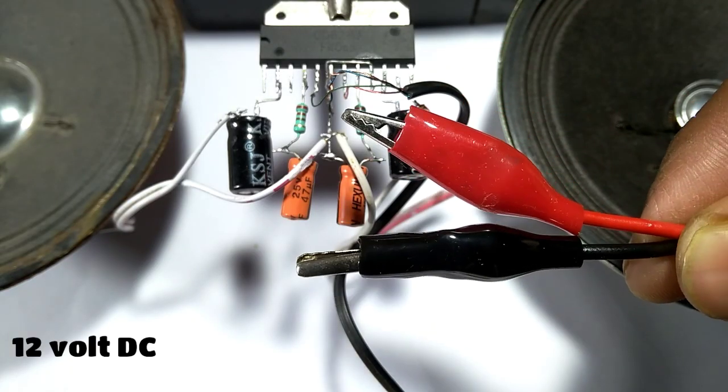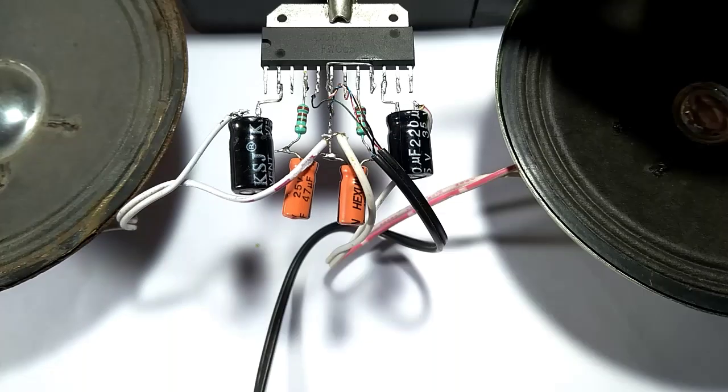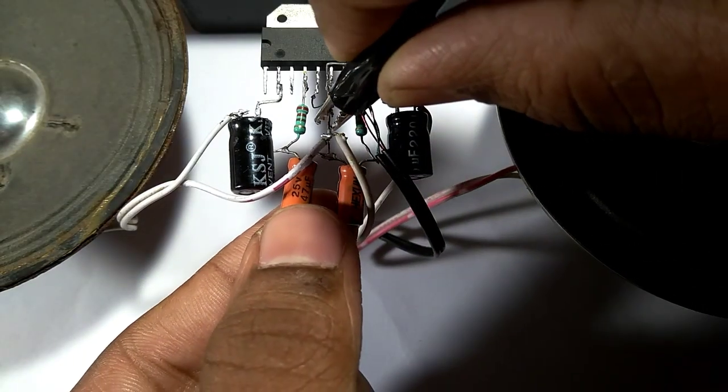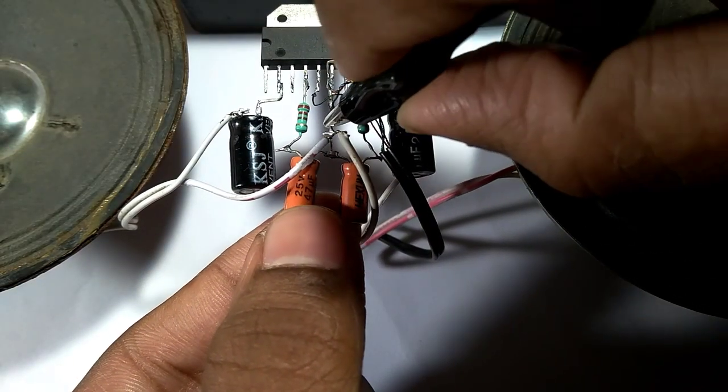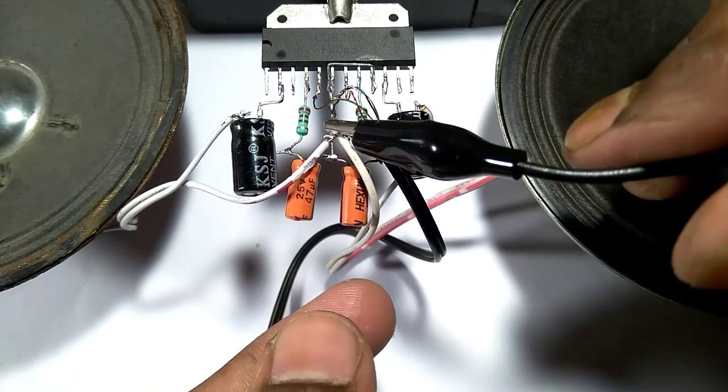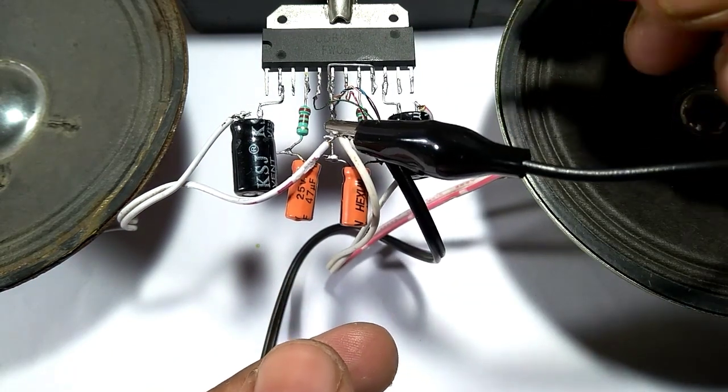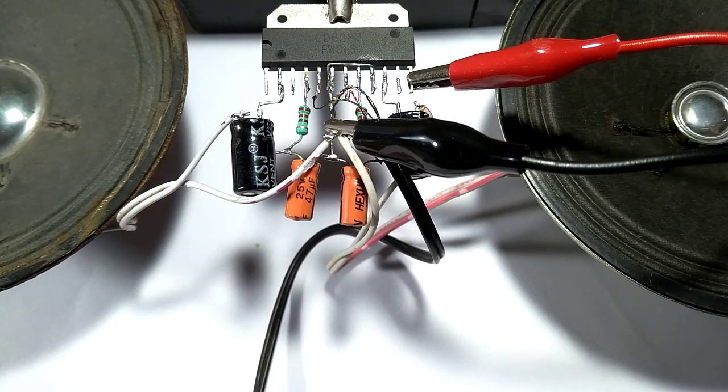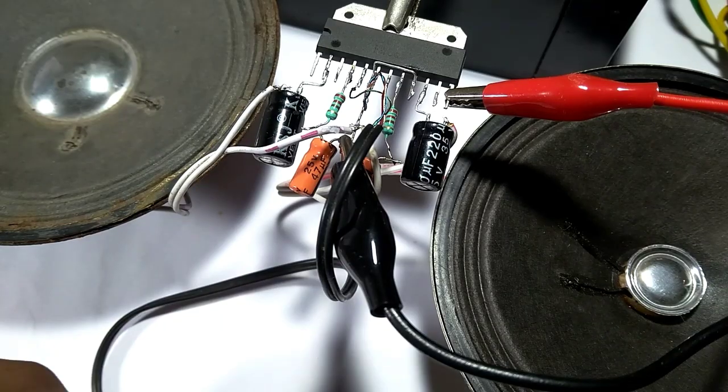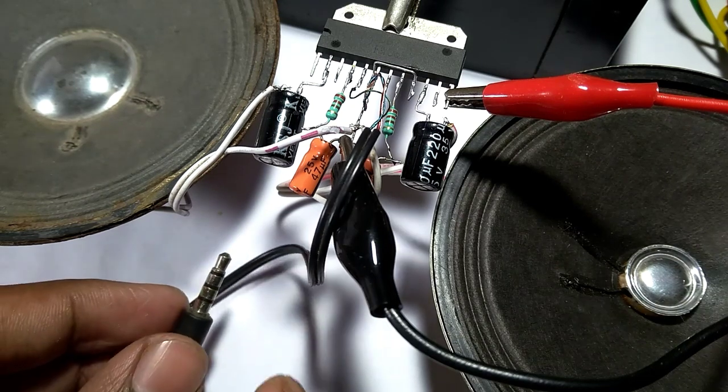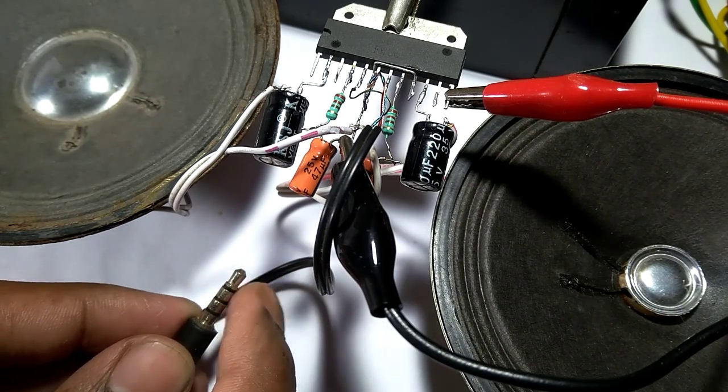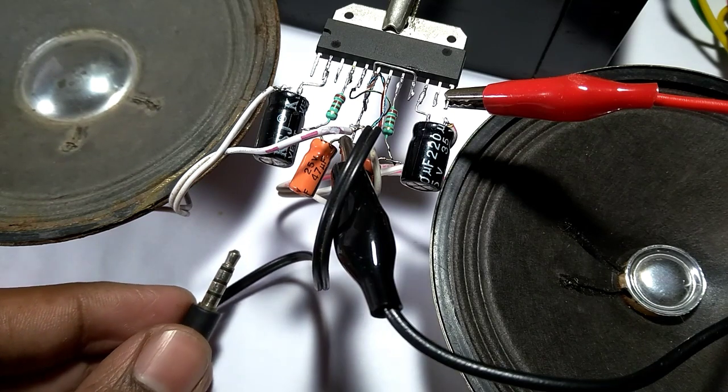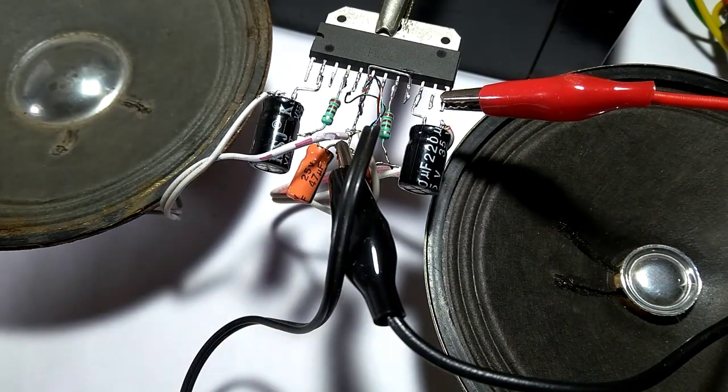For this circuit I use 12 volt DC. I connect the ground to IC pin 6 and the positive to IC pin 8. Then you can see the speaker response when I touch the audio jack.